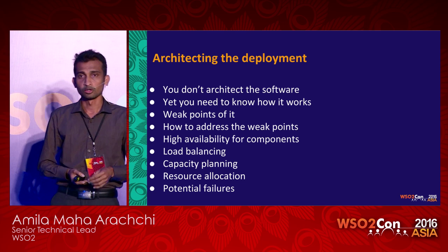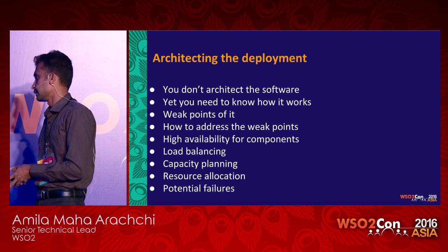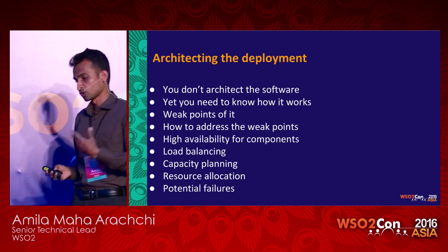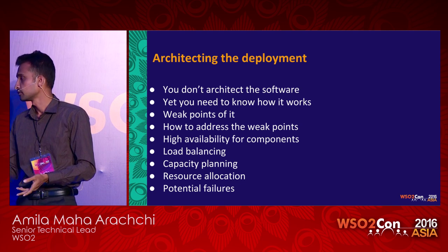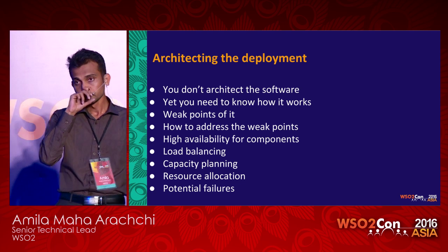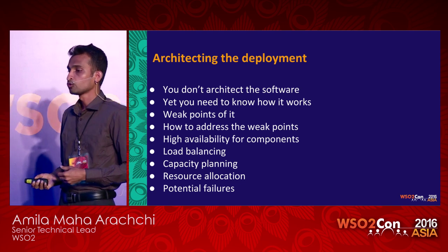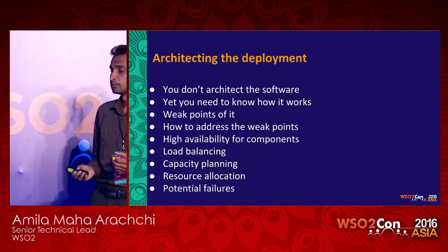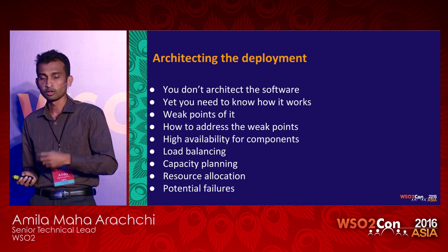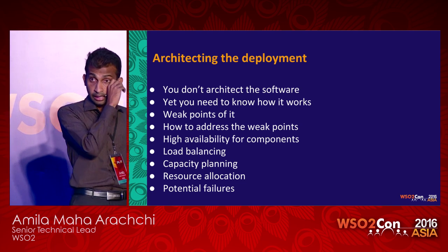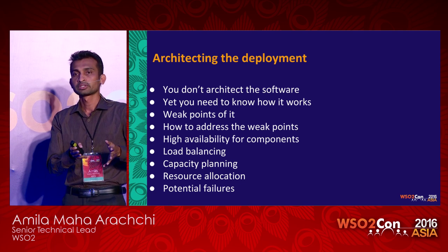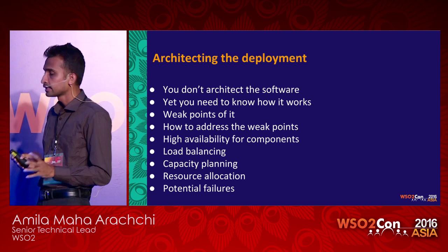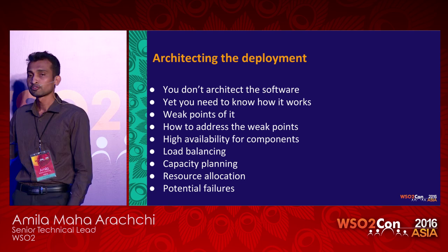Then comes the load balancing factor. When you have multiple instances running, you obviously need load balancing between them. The most common scenario is to load balance traffic to, say, two or three gateway instances. But there are more advanced scenarios as well. For example, if you want to roll out a new version of an API, it might not be wise to simply push the new API to the live system and open all traffic. It would be wiser to route a small portion of traffic to the new API and the large portion to the old API, monitor it for a certain time, and then gradually move all traffic to the new one.